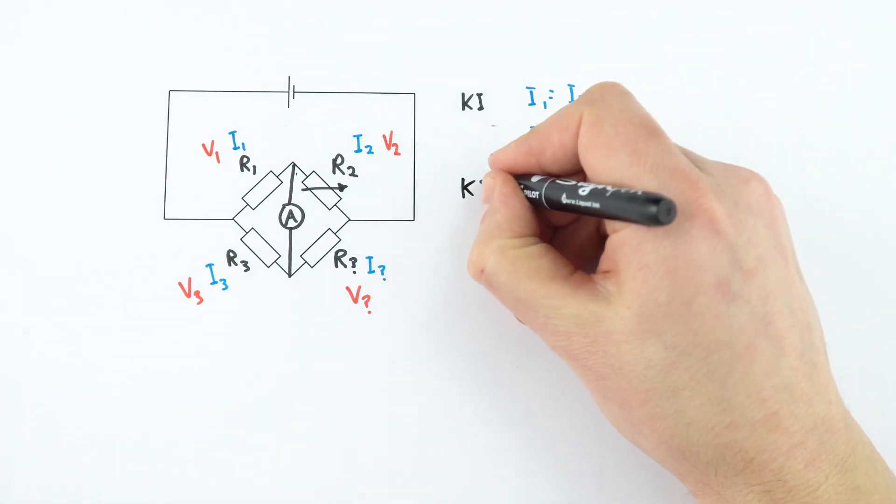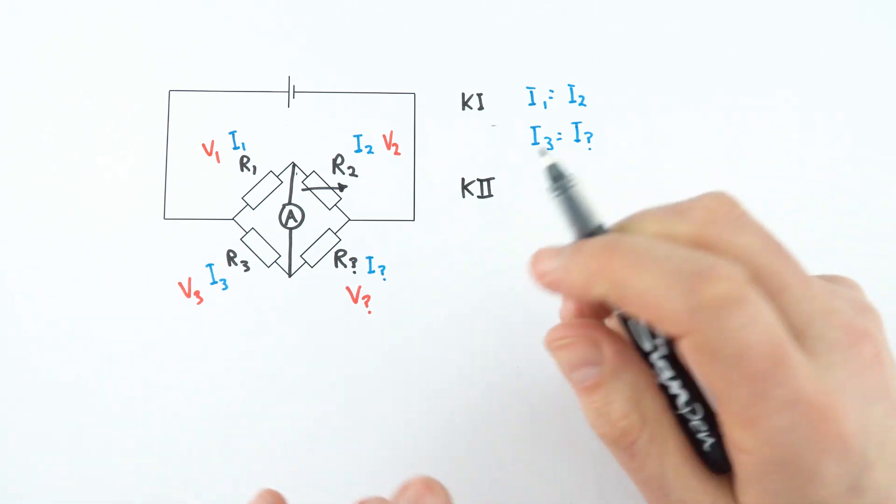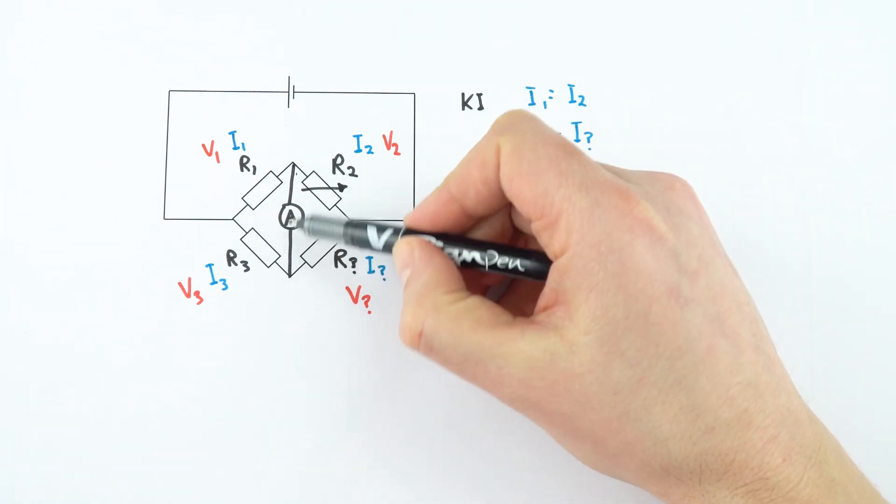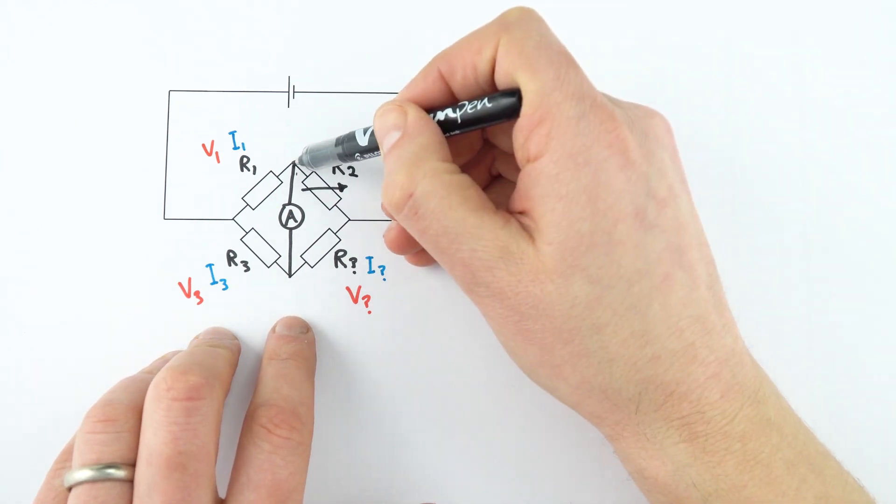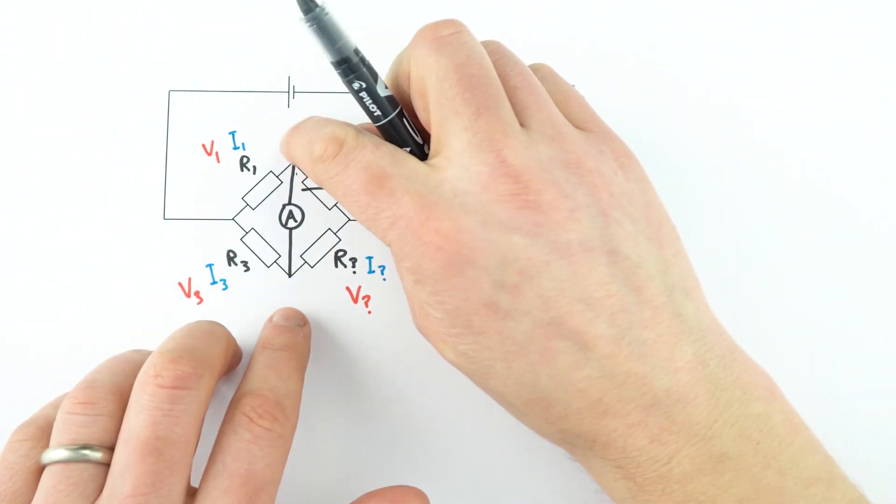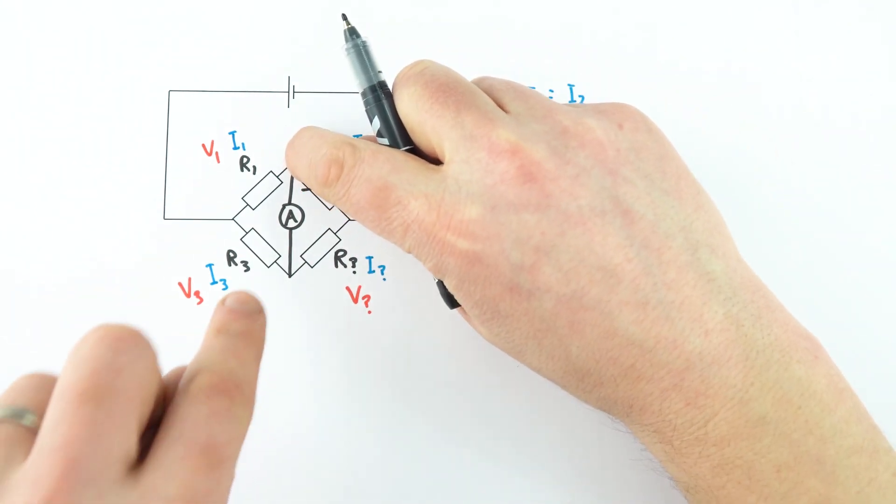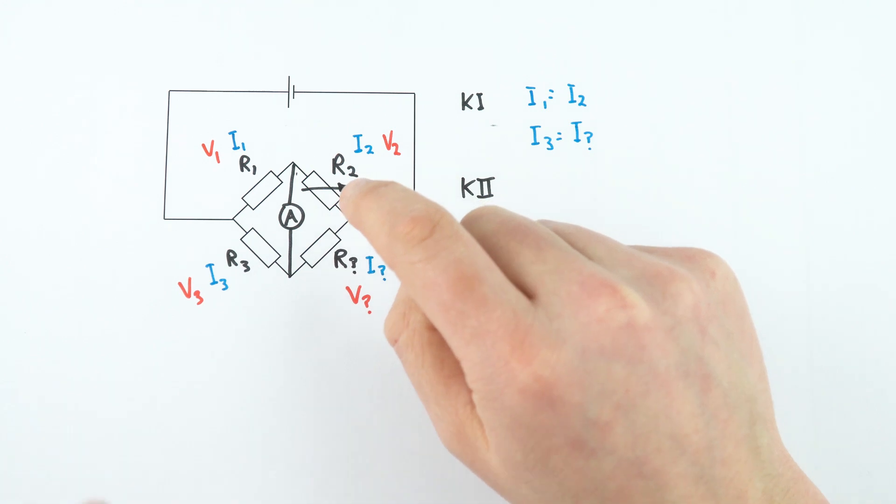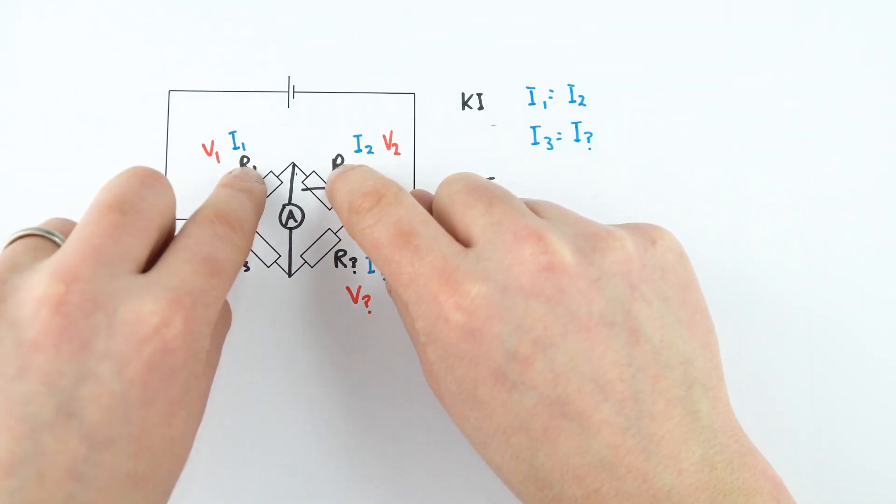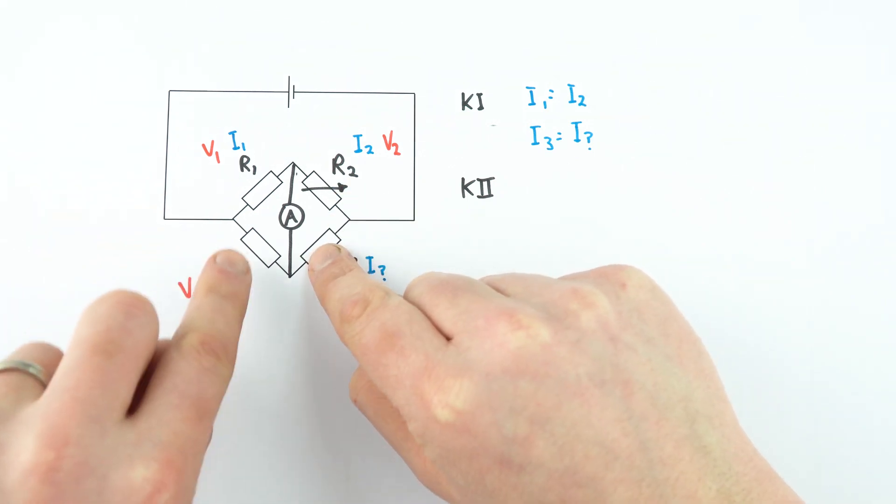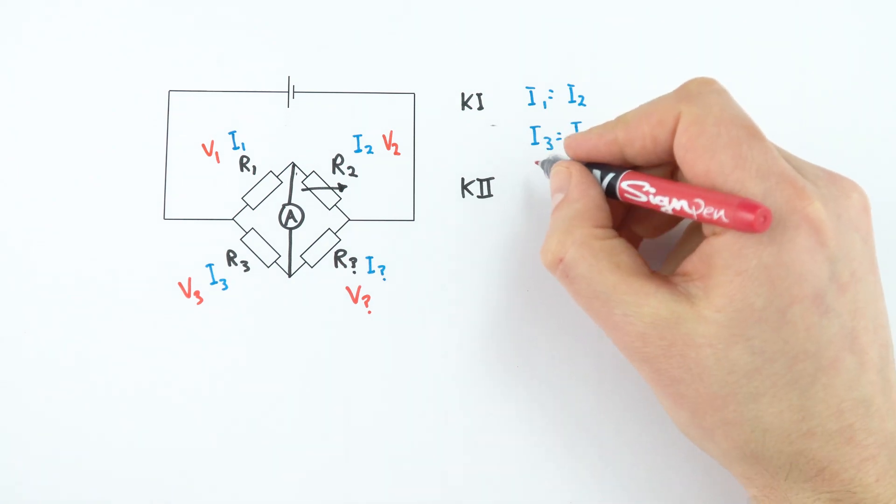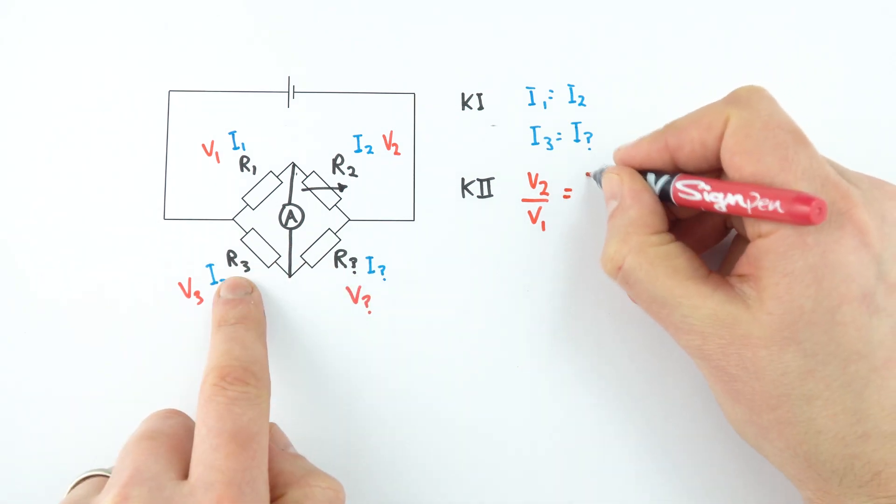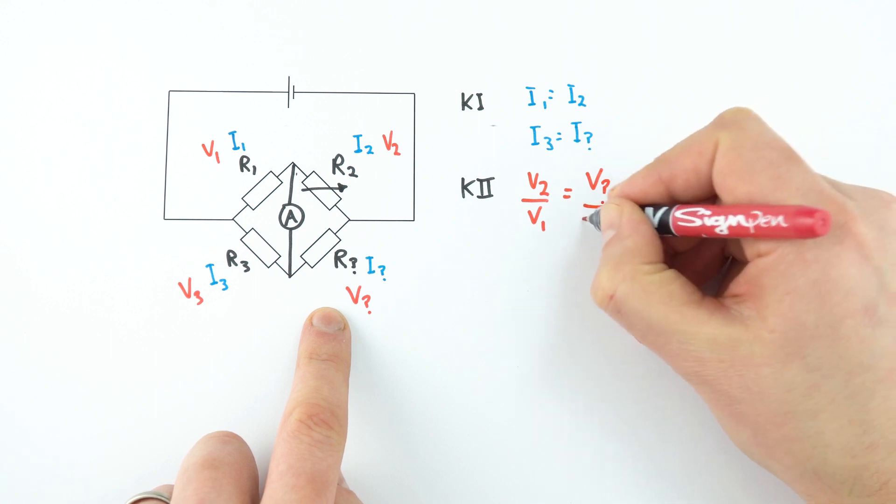We can then apply Kirchhoff's second law. Kirchhoff's second law is about the sum of the EMFs being equal to sum of the potential differences around any closed loop. Now, if there's no current flowing across this ammeter, then that means that it must have the same electrical potential here as it does here. Otherwise, that would cause there to be a current flowing through that. And what that means is that effectively the ratio of the potential difference in this part to this part must be the same as the ratio of the potential difference in this part to this part. So what we can say is that V2 over V1, the ratio of their potential differences, must be the same as the ratio of the potential differences here, which is V unknown divided by V3.